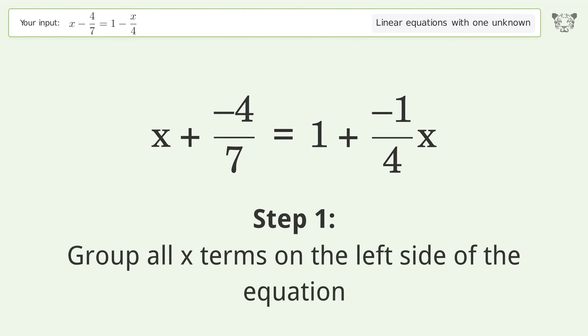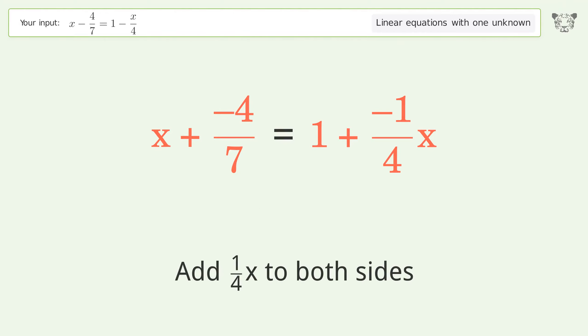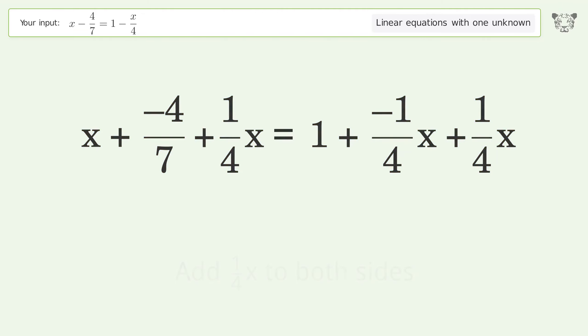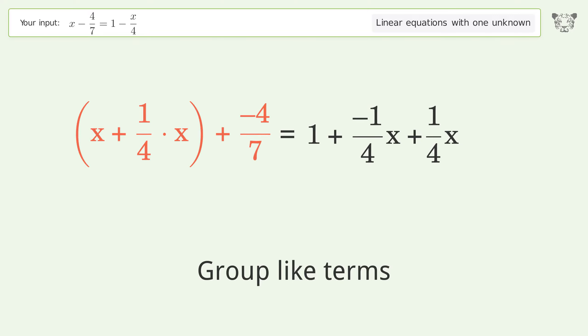Group all x terms on the left side of the equation. Add 1 over 4x to both sides. Group like terms. Group the coefficients.